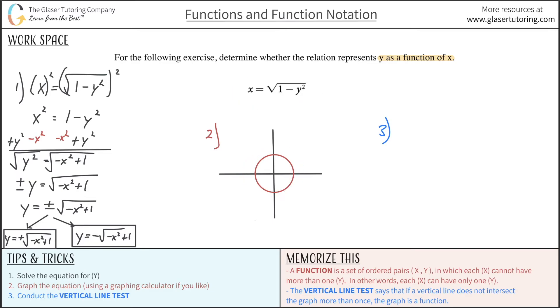Whether it is a function or not is what I'm going to test now. So how we do that is we simply perform this thing called the vertical line test. And the vertical line test says that if a vertical line does not intersect the graph more than once, meaning it intersects it only once or no times, then the graph is a function.